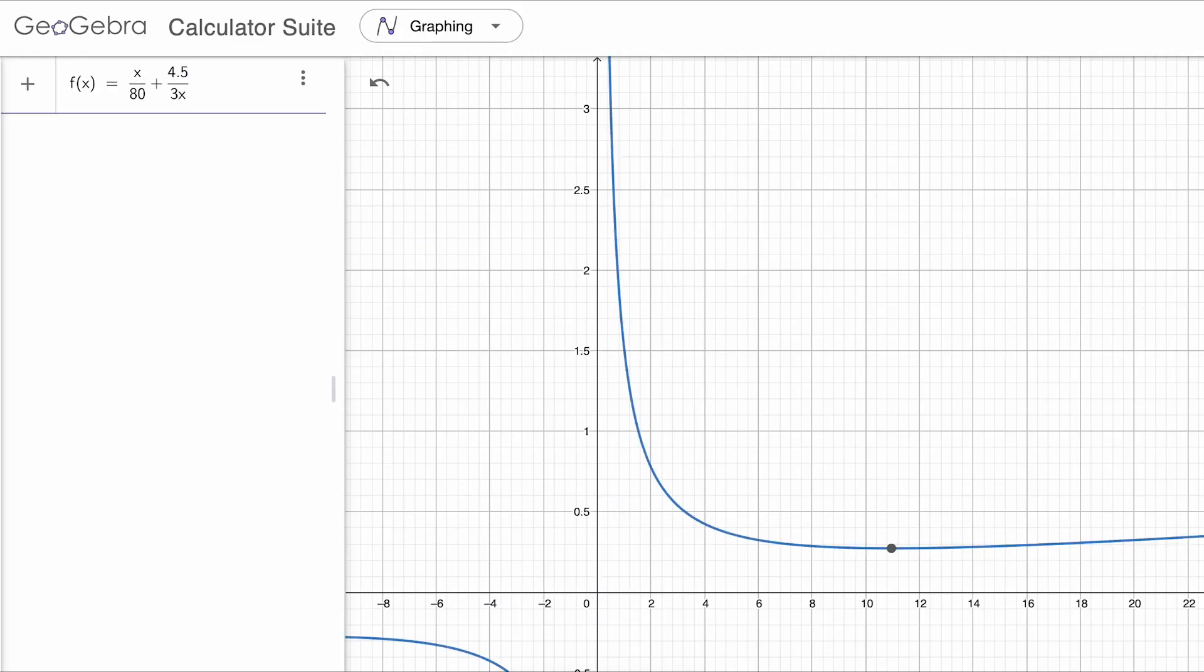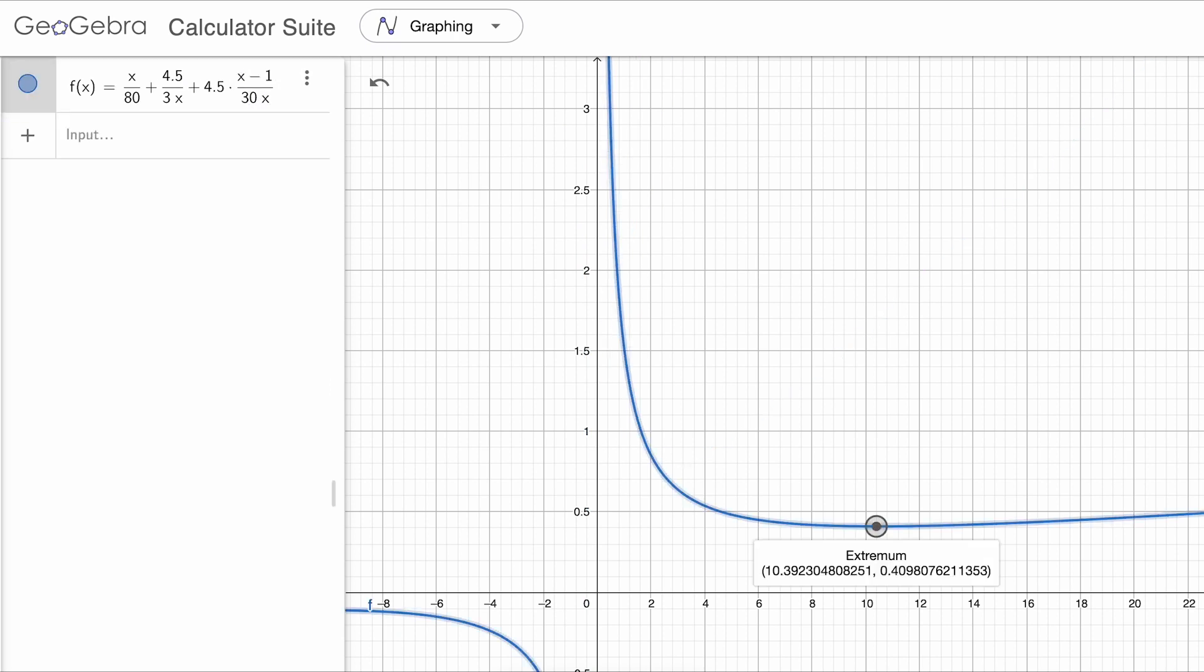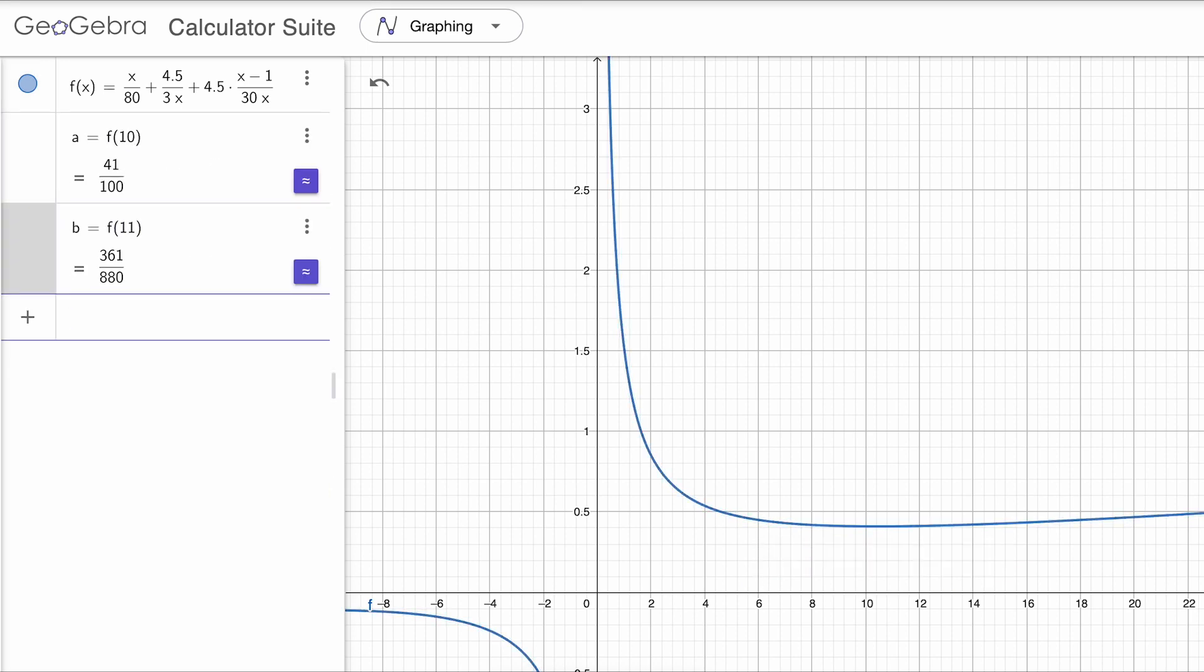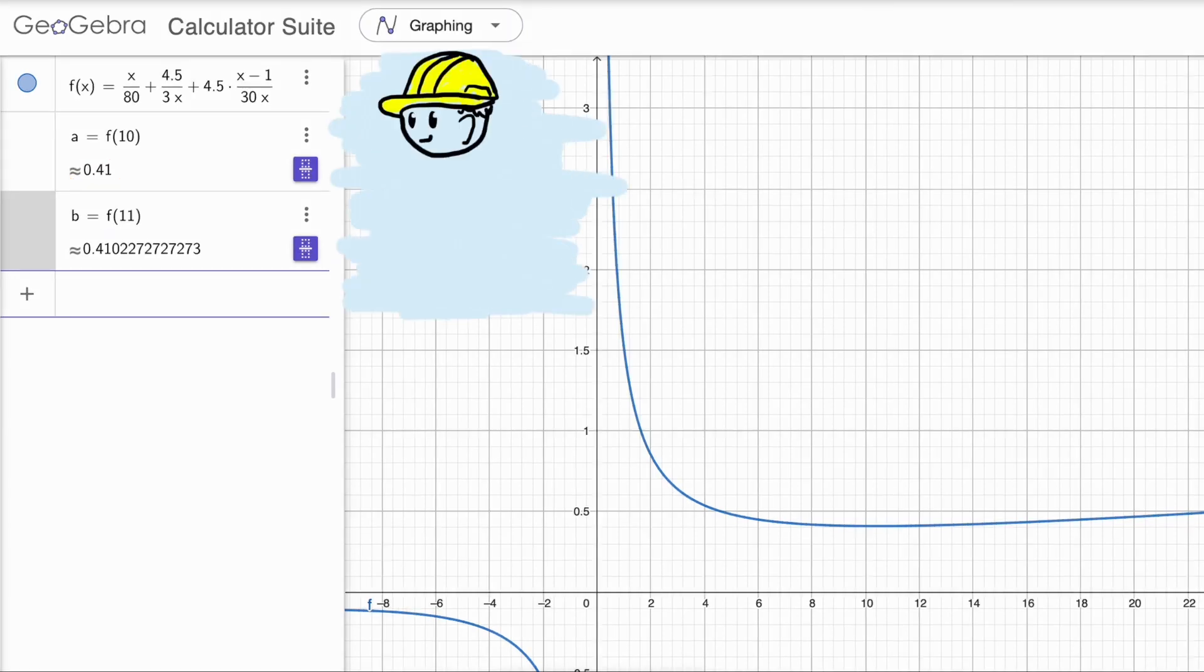The graphing approach gives us an optimal value of 10.39 bus stops and a time of 0.41 hours, or about 24 and a half minutes. We can't have a fractional bus stop, so I tested 10 and 11 in our model, and 10 won out. But barely. 0.41 hours compared to 0.41023. So the same for all practical purposes. But not if you're the engineer. If you're the engineer you'll go with 10 because it costs less money.